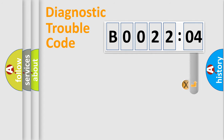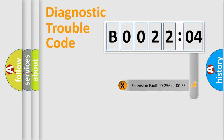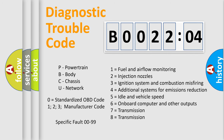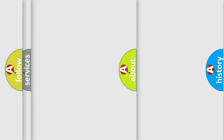The add-on to the error code serves to specify the status in more detail — for example, a short to ground. Let's not forget that such a division is valid only if the second character code is expressed by the number zero.